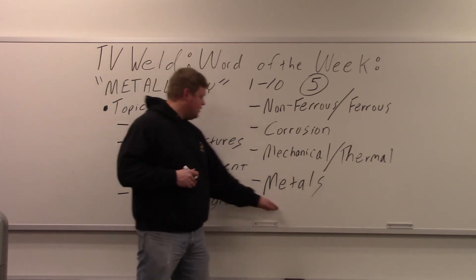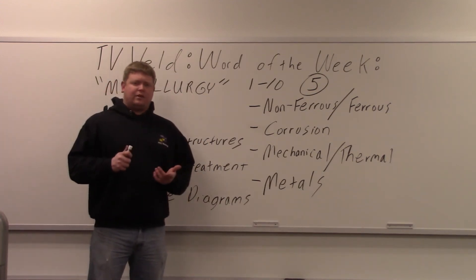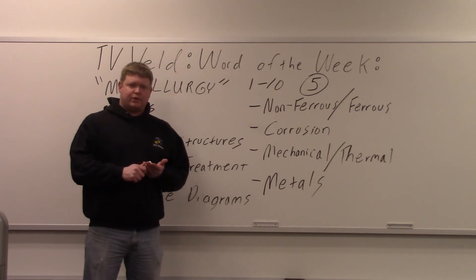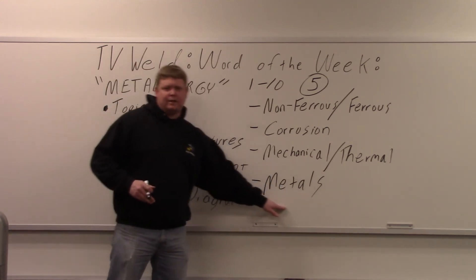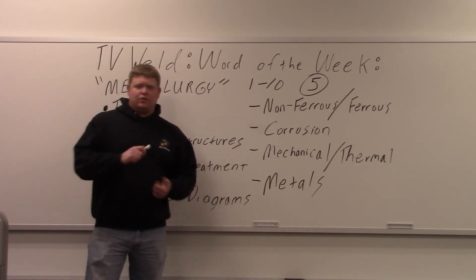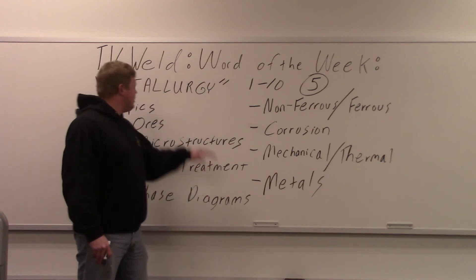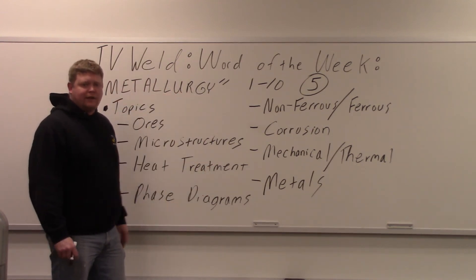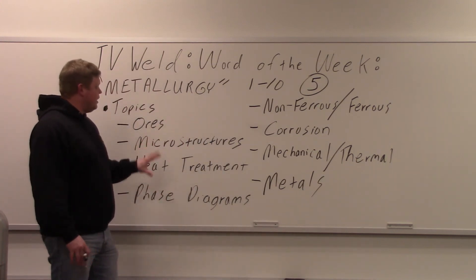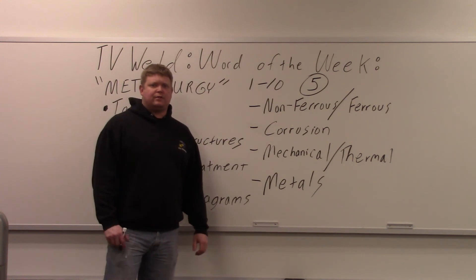And last but not least, metallurgy is the scientific study of metals. The common ones in welding are steels, stainless, and aluminum, but there are a ton of other metals — pull up the periodic table and look at how many there are. Metallurgy studies all of them: precious metals like gold, silver, and platinum group metals, as well as titanium and many more. Hopefully that gives you a good idea of what metallurgy is and the topics it includes. Thanks for watching and subscribing to TV Weld — we'll see you next time.